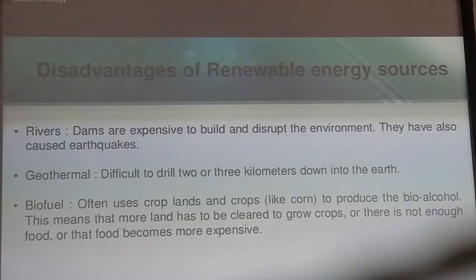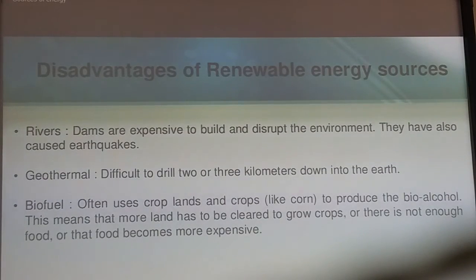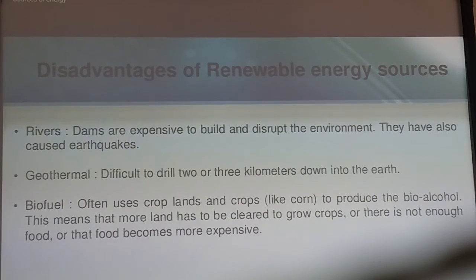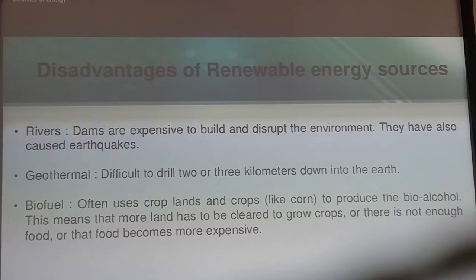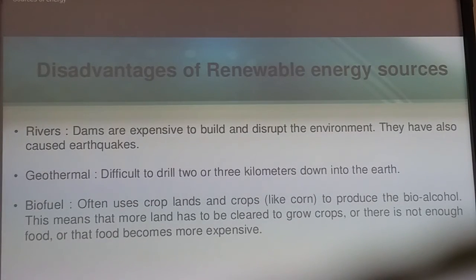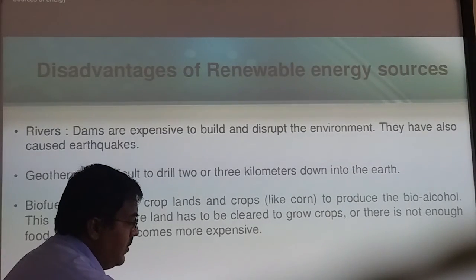Dams are usually constructed in high regions. For geothermal, it is difficult to drill two to three — or even ten to twelve — kilometers down into the earth. For biofuel, cropland is required to produce biofuel plants, meaning more land has to be cleared to grow crops. This means there is not enough food, and food becomes more expensive. These are some of the drawbacks and disadvantages of renewable sources of energy.